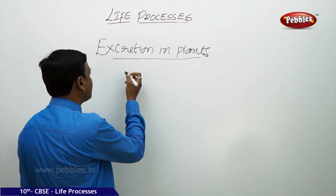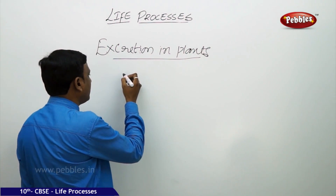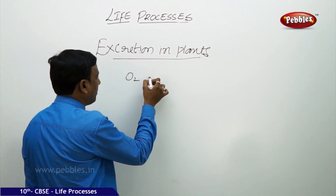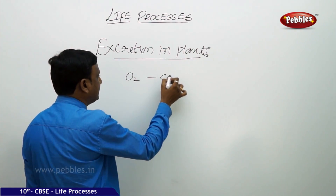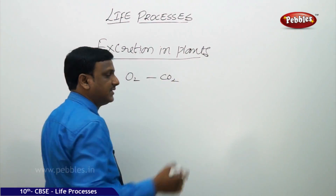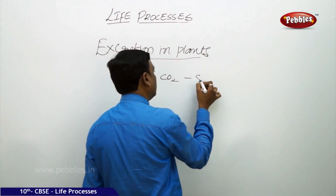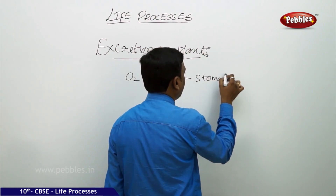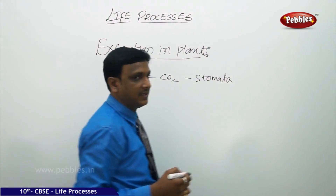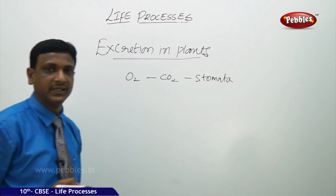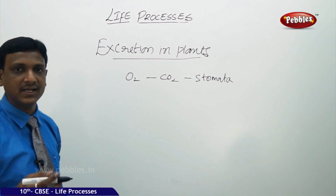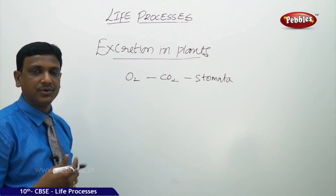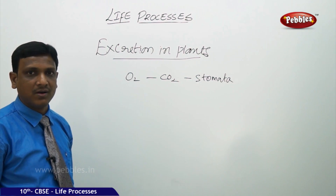We know how gases are managed in the plant body. Oxygen and carbon dioxide can easily be exchanged with the air with the help of stomata. So they have no problem exchanging gases — they can release carbon dioxide or take it in, and they can take in or produce oxygen.